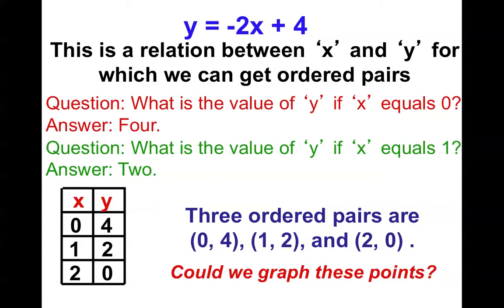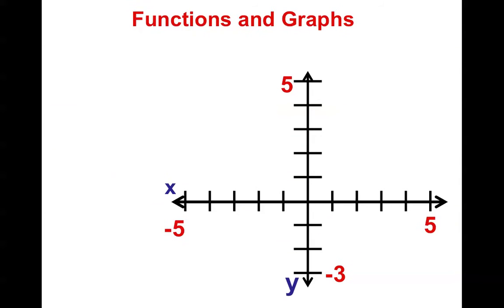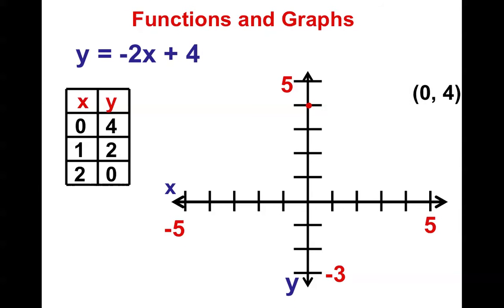Can we graph these points? Sure, we can make a picture. So the function rule can get us to ordered pairs, which can also get us to a graph. Notice here are the points. And this would be known as a linear function, because it makes a straight line.